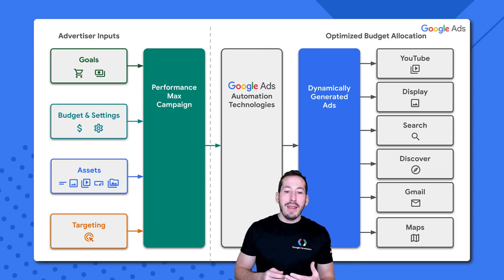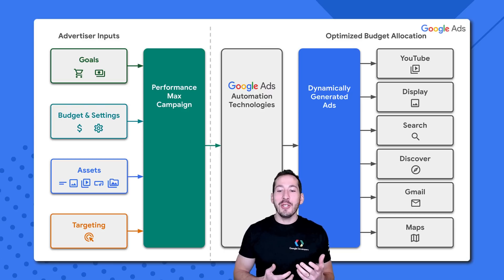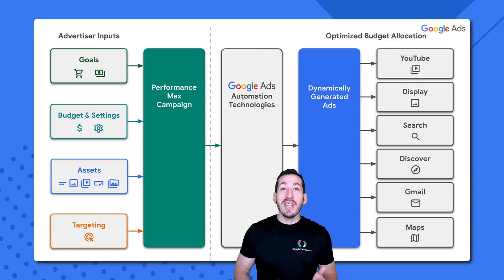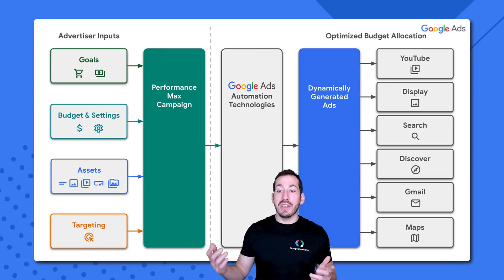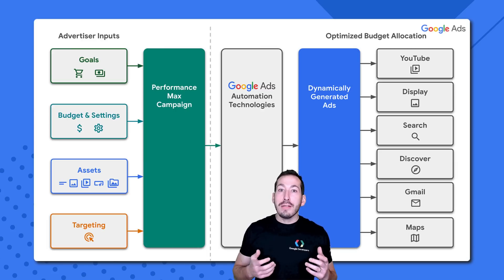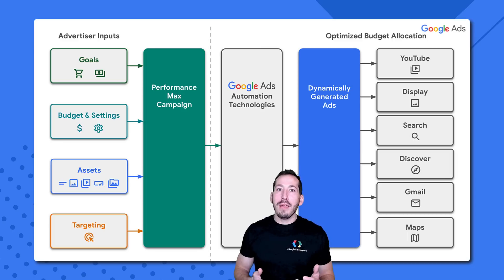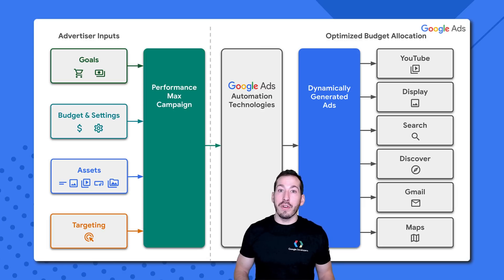We'll feed that into the Google Ads system. And using some advanced automation technology, the Google Ads system will then create ads dynamically for you using all of the assets and other inputs that you provided, and then serve them on the channel that's most likely to convert. This could be any channel: YouTube, Display, Search, Discover, and so forth. The system will also optimize your budget to get the highest ROI based on whatever your bidding strategy is, whether it's maximizing conversions or maximizing conversion value.